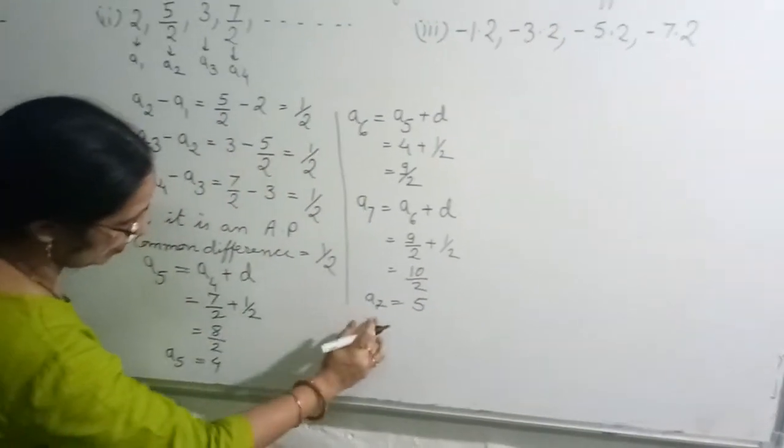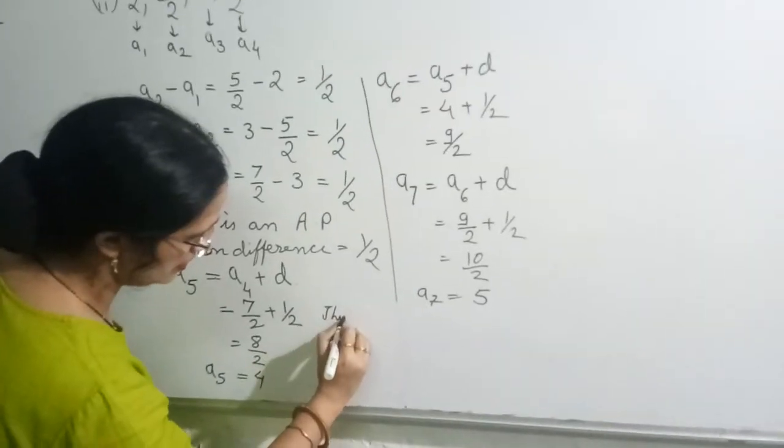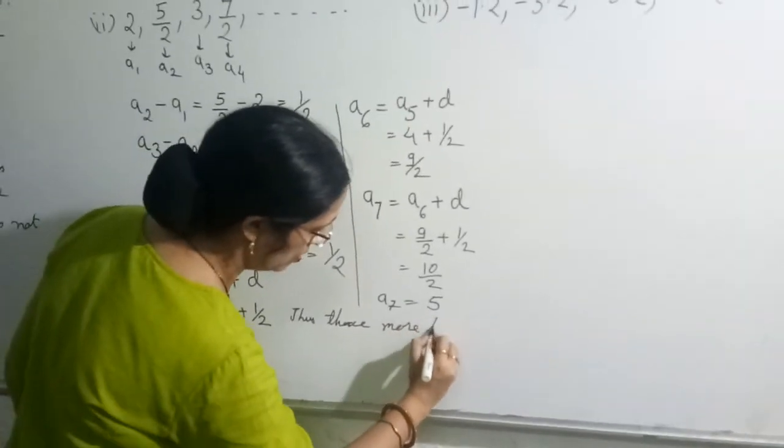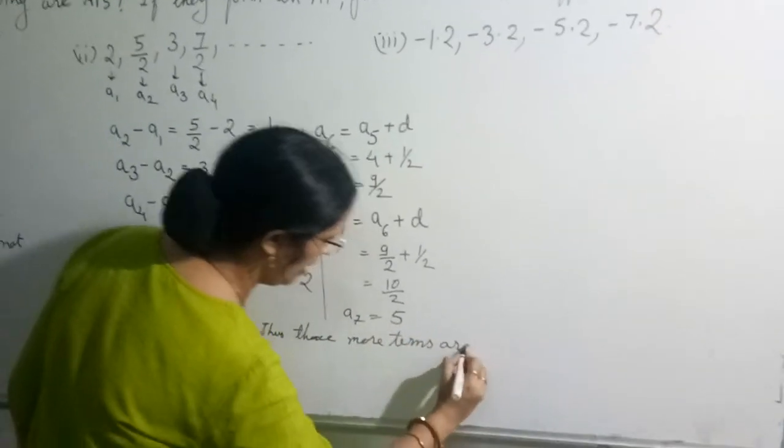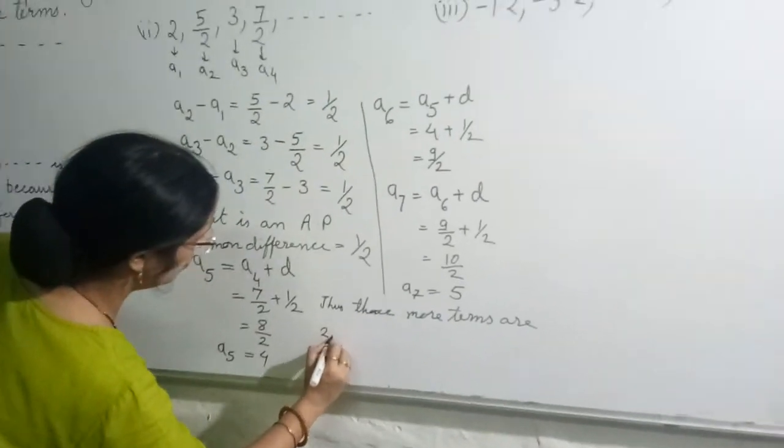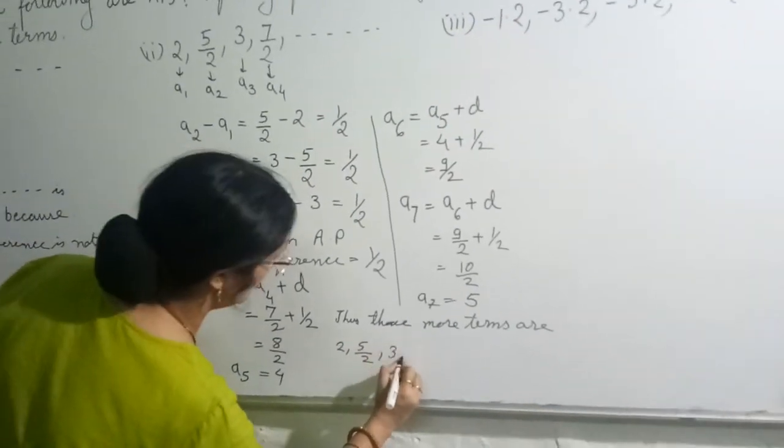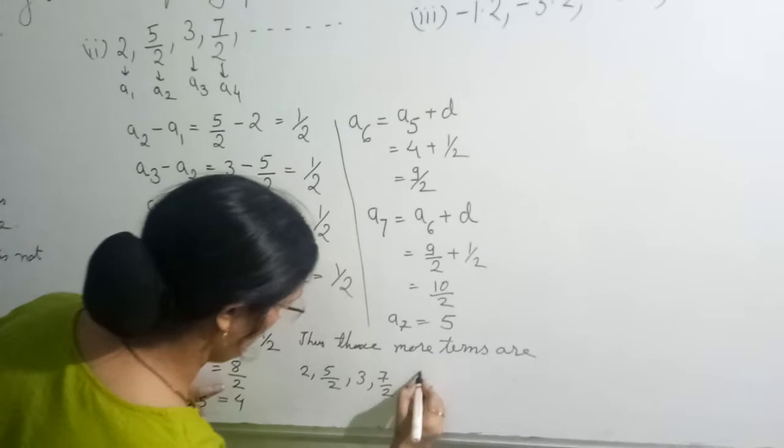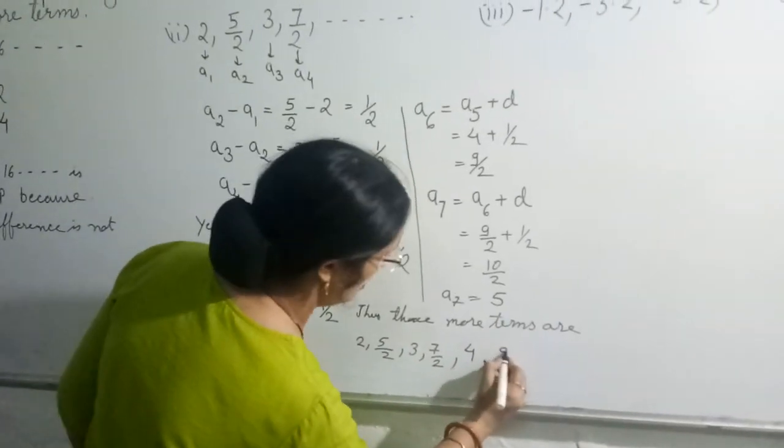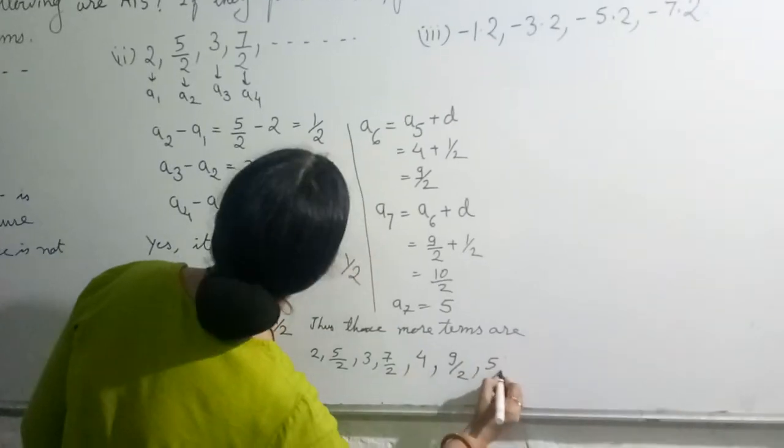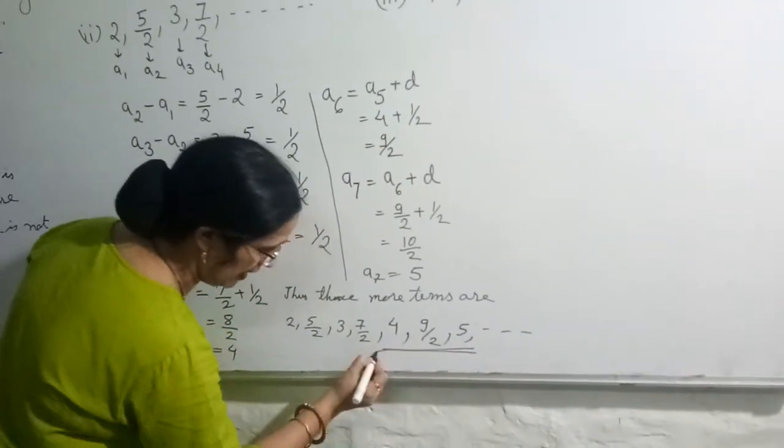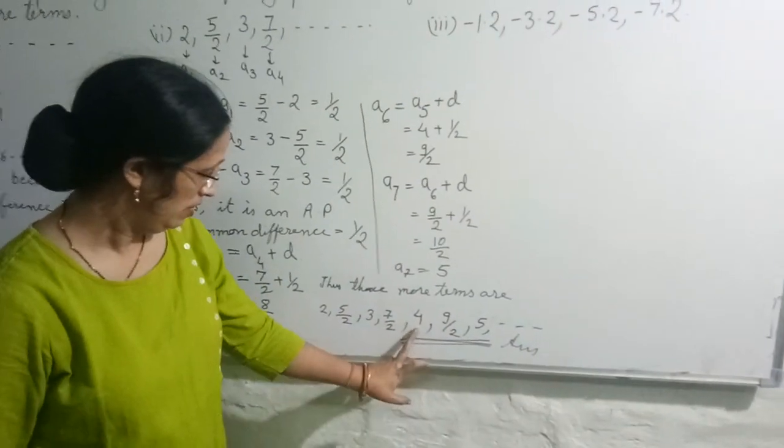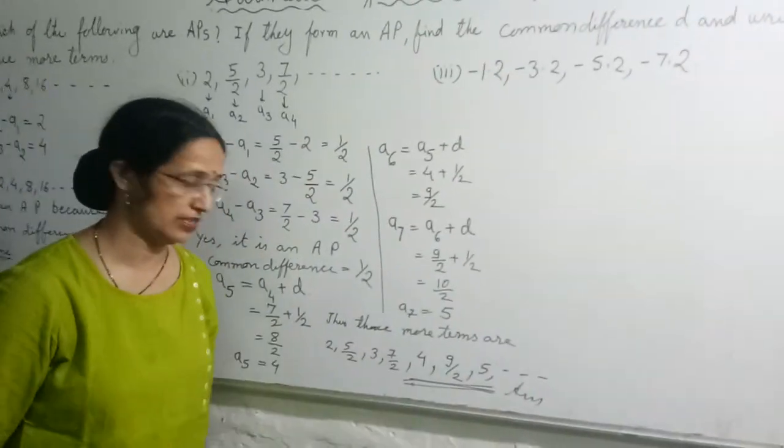So 3 more terms are. What are 3 more terms? I am writing from starting. 2, 5 by 2, 3, 7 by 2, comma. Now this is 4, comma 9 by 2, 5, comma dash dash dash. So these 3 more terms we have found. This is our answer. 5th term, 6th term and 7th term.